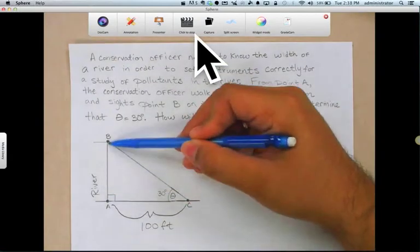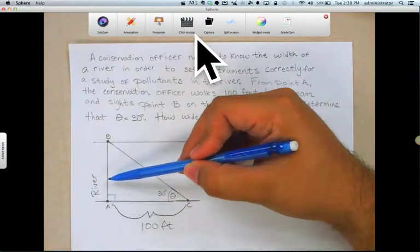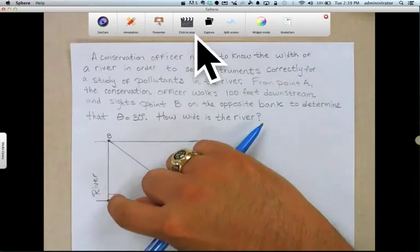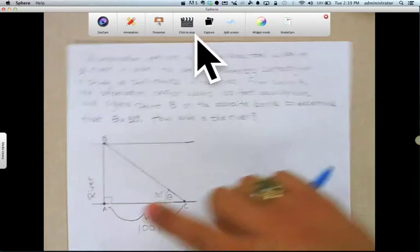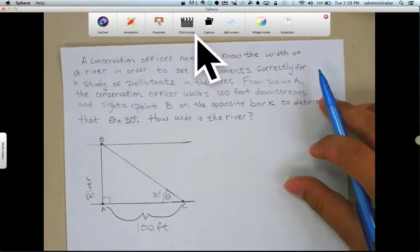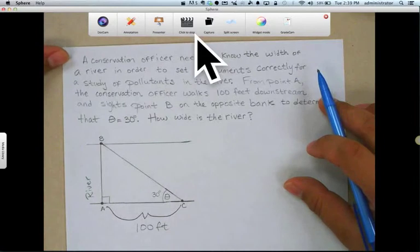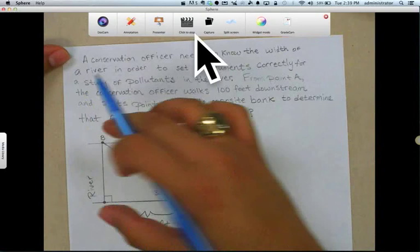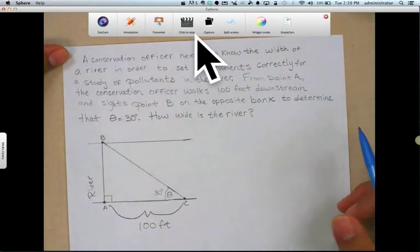Perhaps it's really deep and not very practical for them to run a measuring tape across. Maybe it's actually really wide. So we can use right triangle trigonometry here to perform this calculation and solve for the width of the river.